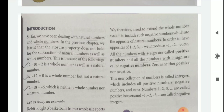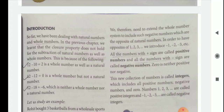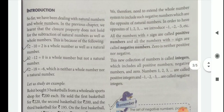In order to have opposites of 1, 2, 3, we introduce minus 1, minus 2, and minus 3, etc. All the numbers with a positive sign are called positive integers or positive numbers, and those with a minus sign are called negative numbers or integers. Children, we know integers are of two types: positive and negative. But remember, 0 is neither positive nor negative.